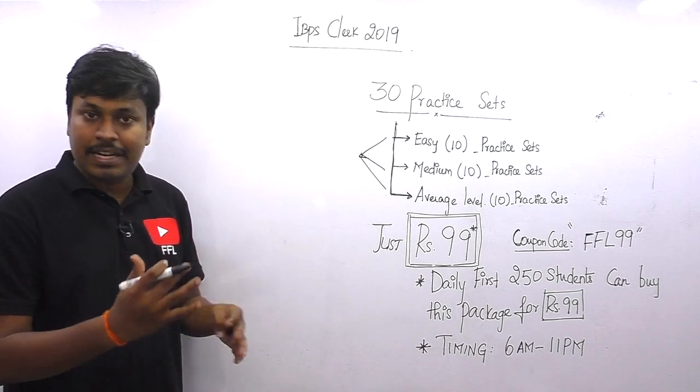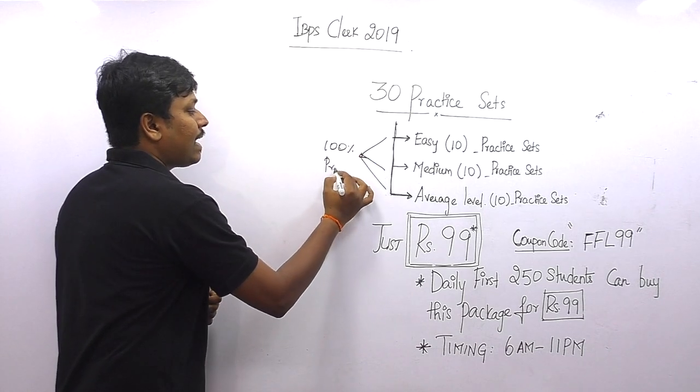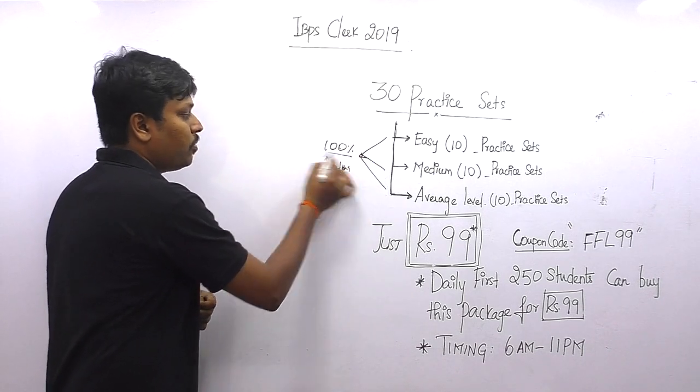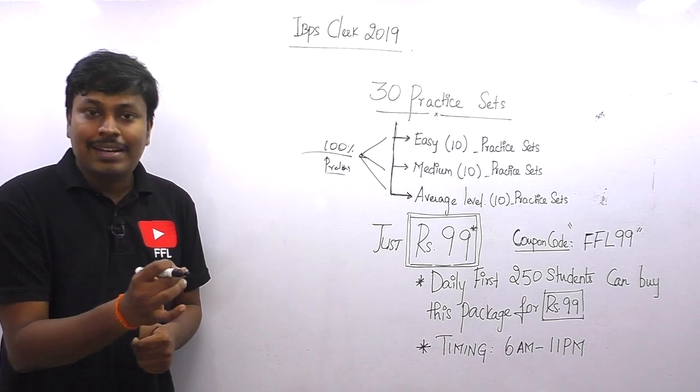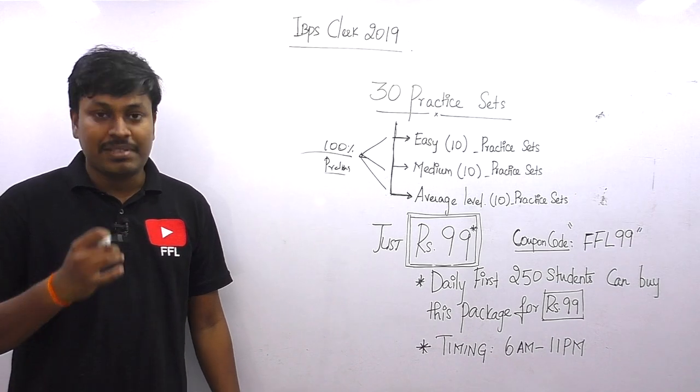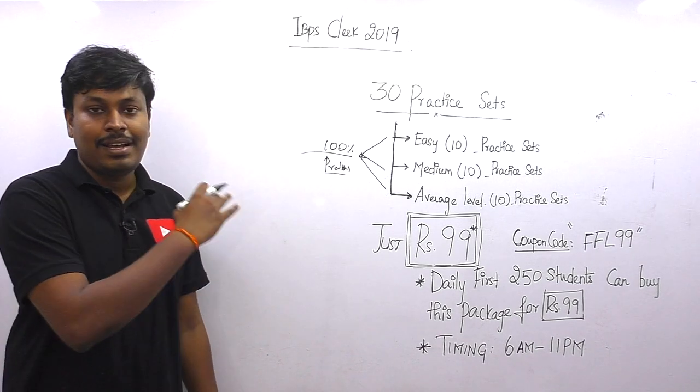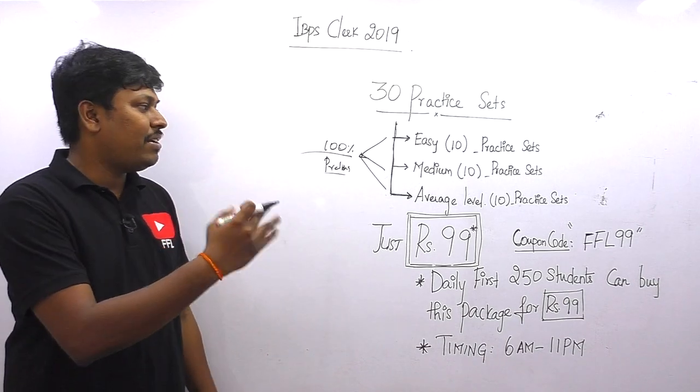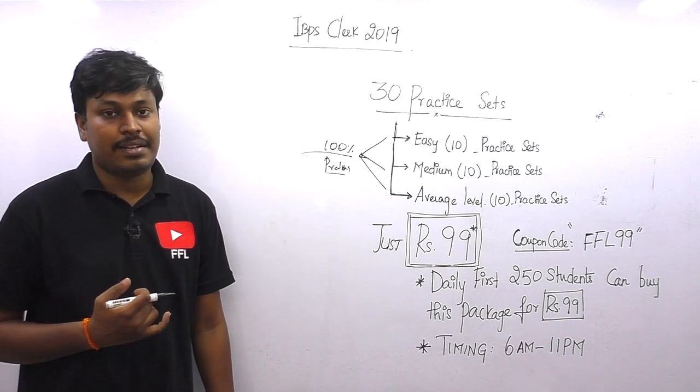Remember, if you practice all these three practice sets, that is 30 practice sets of three different types, definitely you can 100% guarantee that you will crack the prelims exam. Every time after finishing one test, one practice set, try to sit and analyze what are all the mistakes you have done, where you took more time. We have given everything right—time, speed, and accuracy—and also we have lots of options after writing the test.